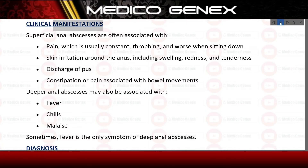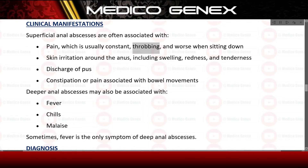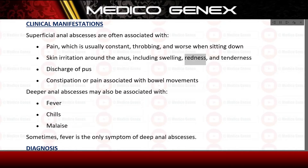Clinical manifestations. Superficial anal abscesses are often associated with: pain, which is usually constant, throbbing, and worse when sitting down; skin irritation around the anus including swelling, redness, and tenderness; discharge of pus; and constipation or pain associated with bowel movements.